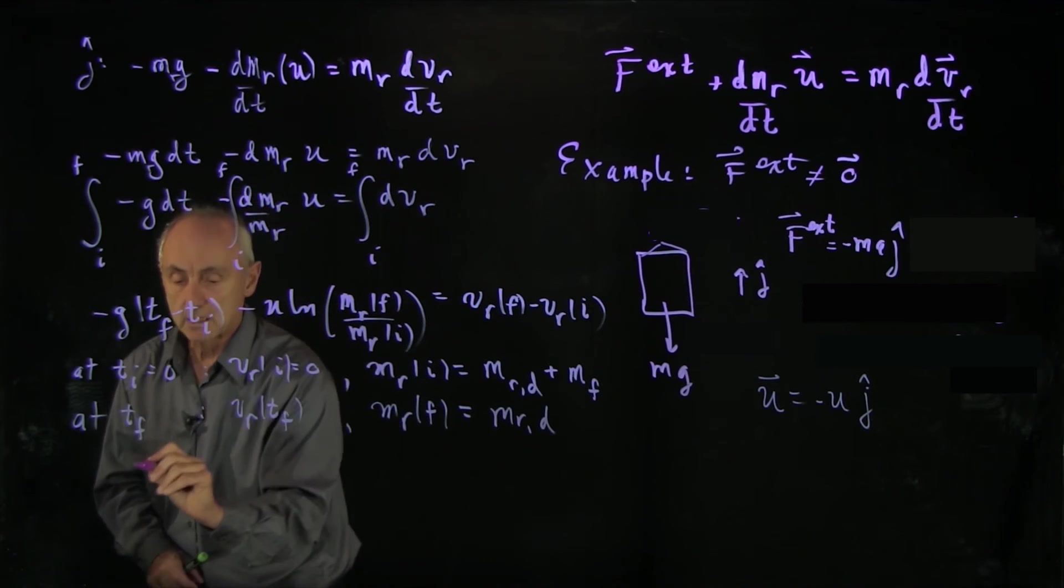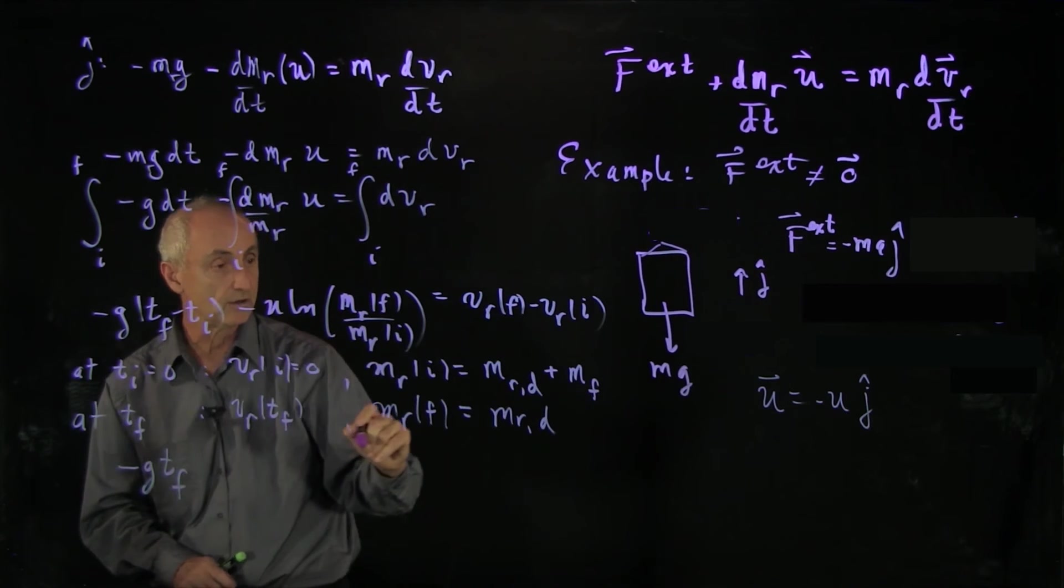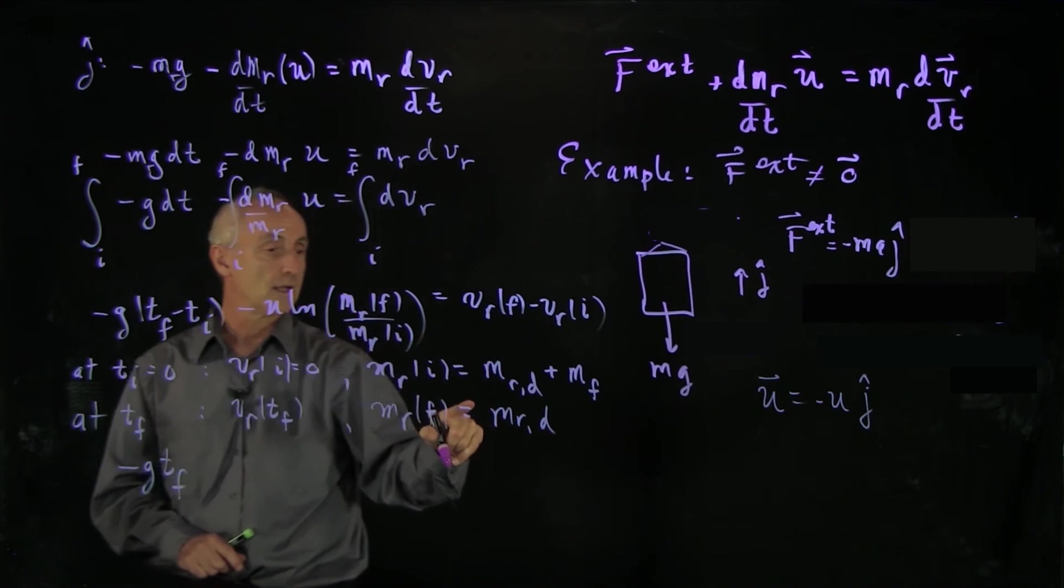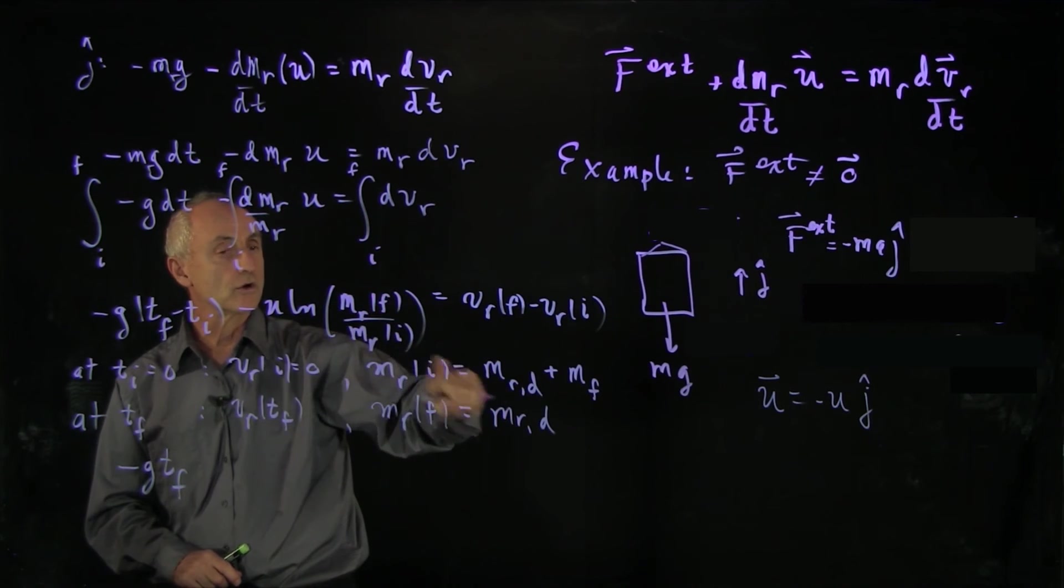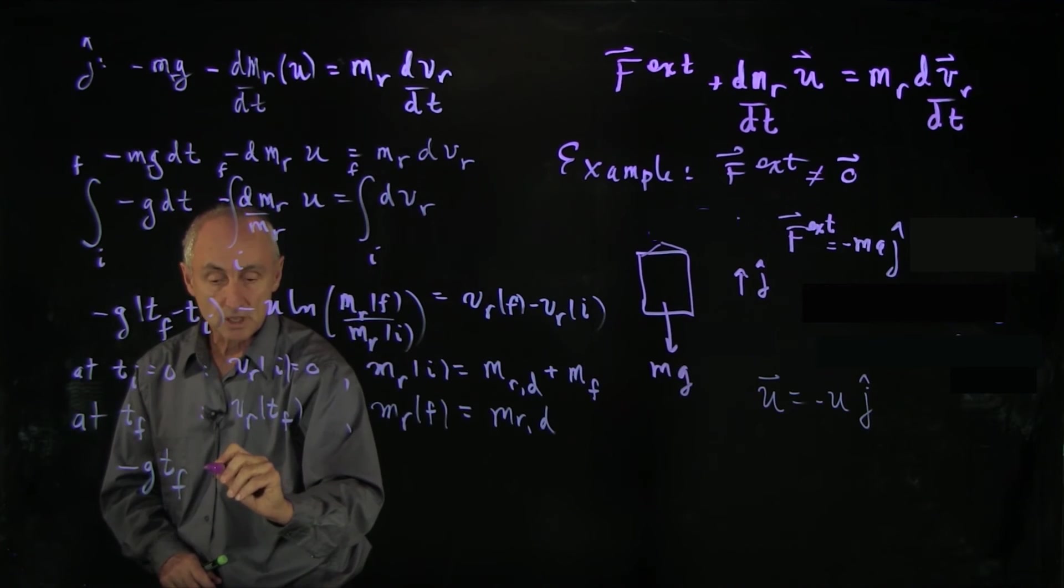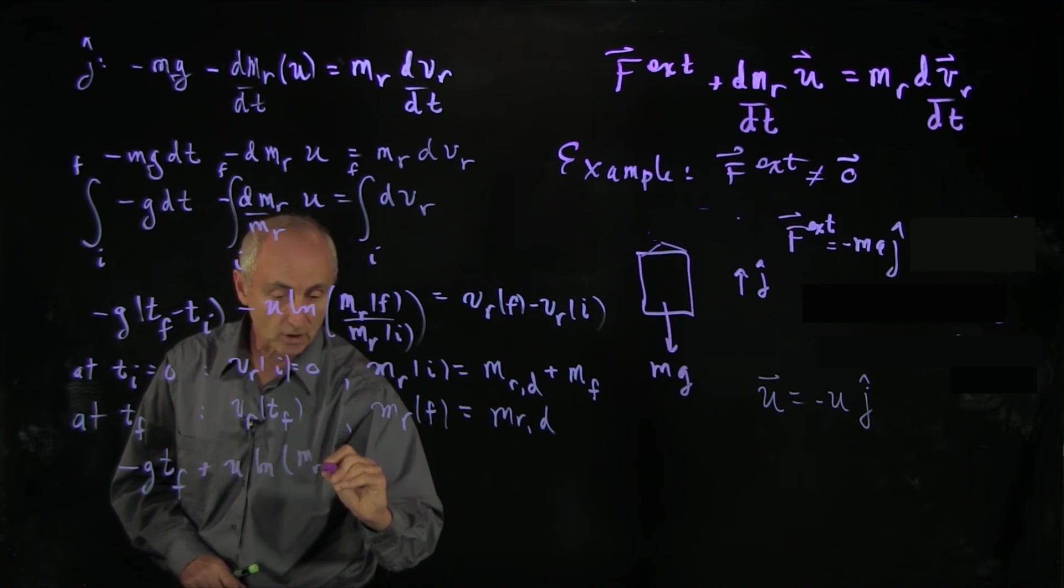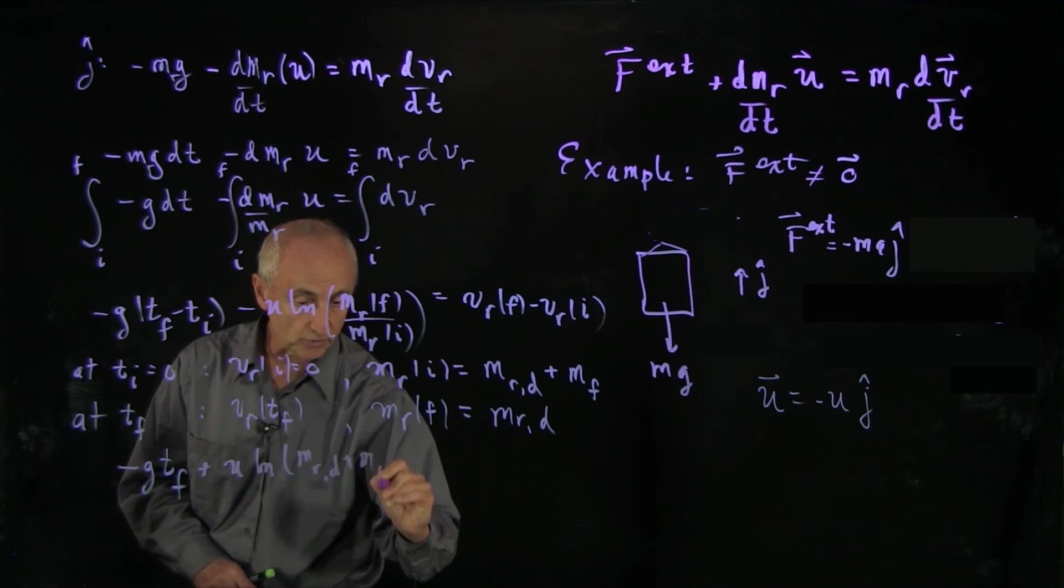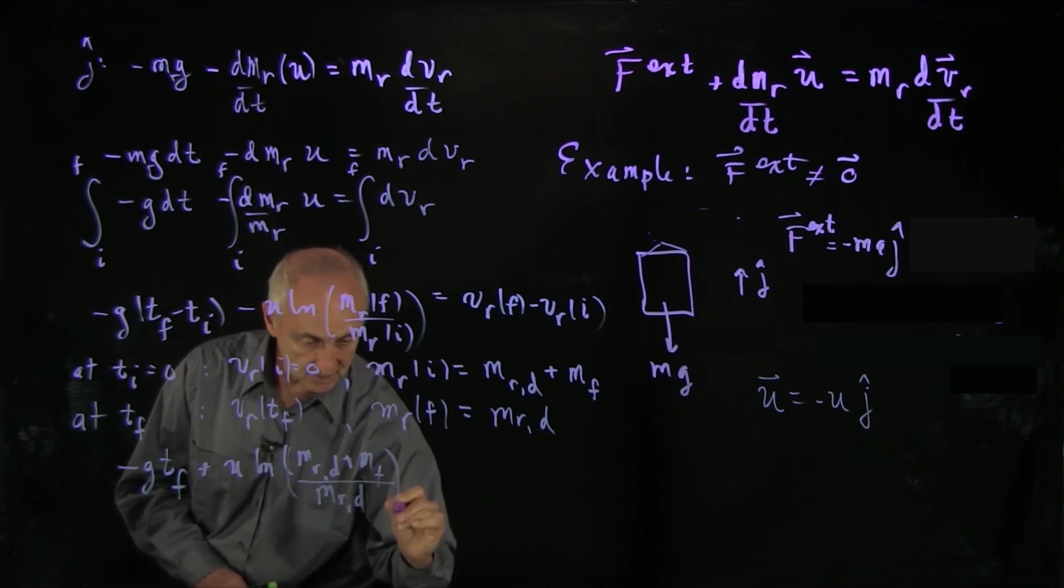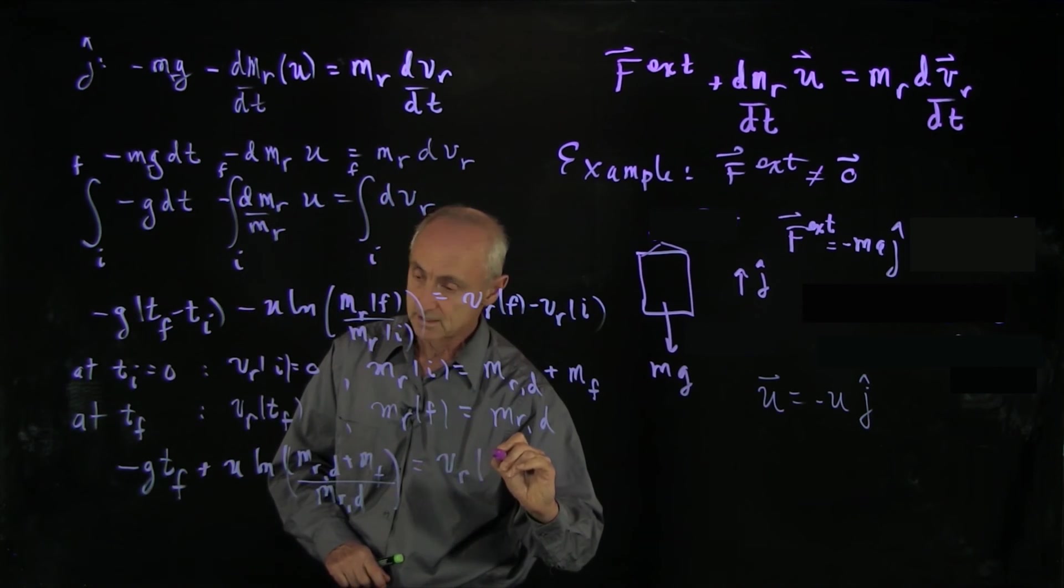And so what we get is we get minus g t final. Now I'm going to switch the sign here. If I invert the log, that will give a minus sign. And I have plus u log of mr of d plus mass of the fuel, that's the initial mass of the rocket, divided by just the dry mass. And that's equal to vr at t final.